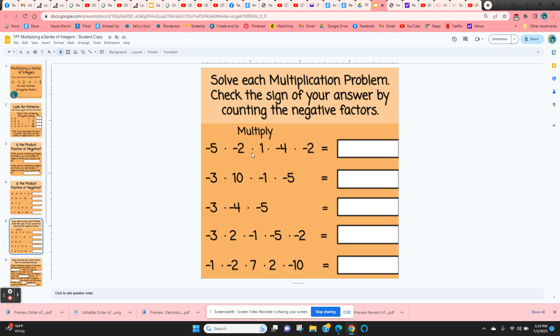When they get to slide five, they're going to be typing in the actual answers. They multiply and then check their answer and make sure their sign is correct by counting the negatives. Here you get an answer of 80. I'm going to check that. There's one, two, three, four negative factors. That means it's a positive answer.